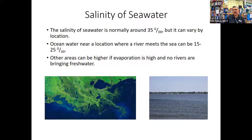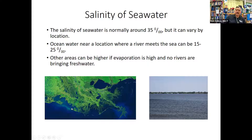So 35 parts per thousand is the average, but salinity varies by location. Ocean water near where a river meets the sea can be much less. This photo shows the Mississippi River delta region of Louisiana, with its swamps and lakes, which have a much lower salinity. Even a freshwater lake has some salt in it.